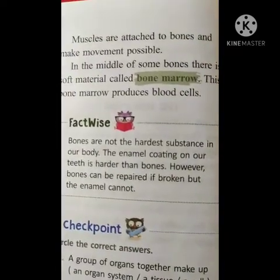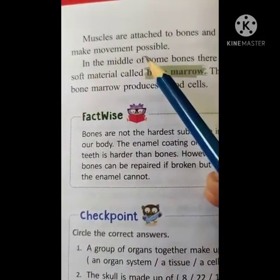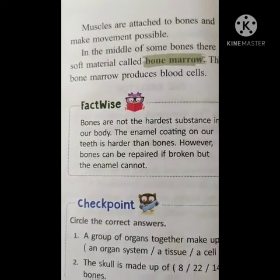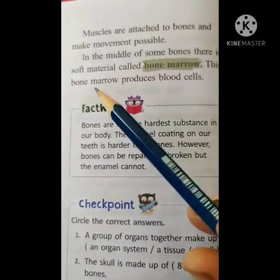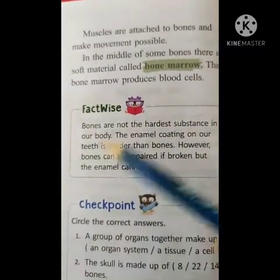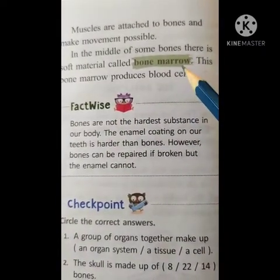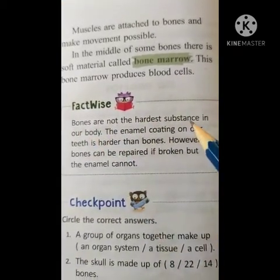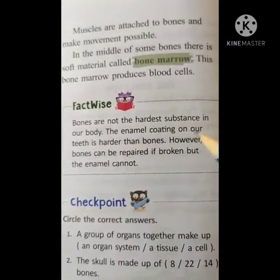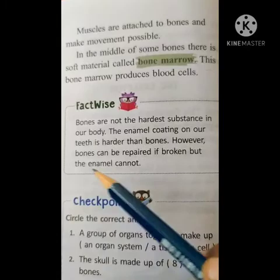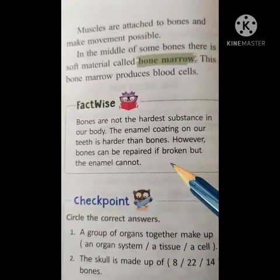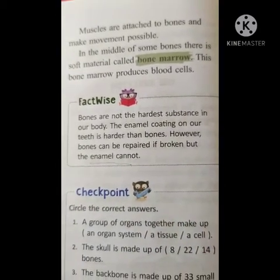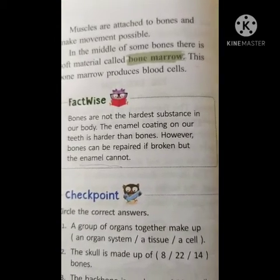The muscles are attached to the bones and make movement possible — muscles help us to move. In the middle of some bones there is soft material called bone marrow. This bone marrow produces blood cells. Fact: bones are not the hardest substance in our body — the enamel coating on our teeth is harder than bones. However, bones can be repaired if broken, but the enamel cannot. The enamel of the teeth is the only part that cannot repair itself.